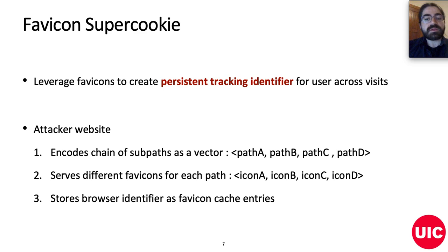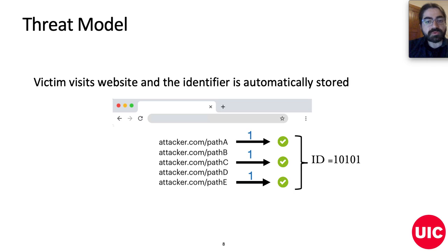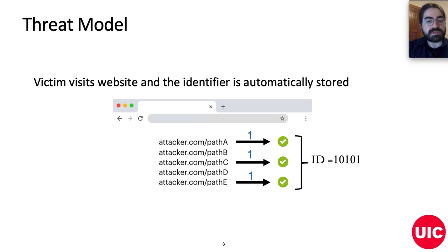In practice, an attacker that controls a website can store a browser ID by encoding the website's subpaths as bits of a vector and serving different favicons for each path. This combination of cached favicons forms a persistent identifier that can be retrieved on every browser visit. In our threat model, we assume that the attacker is any website that wants to identify the user when cookies or other stateful data are not present. The attacker creates a unique browser ID stored through redirections in its inner paths or subdomains, and retrieves it by redirecting the browser through all subdomains and logging the presence or absence of favicon requests to rebuild the browser identifier.